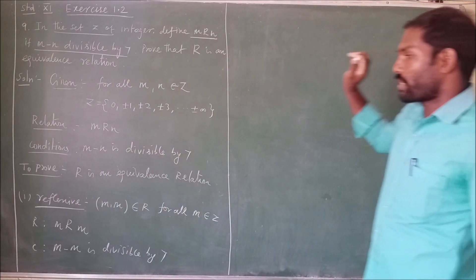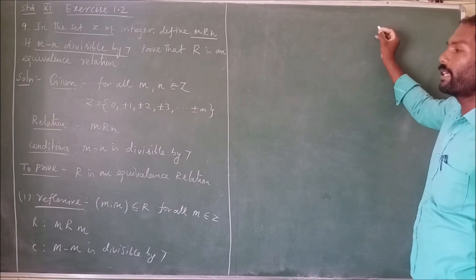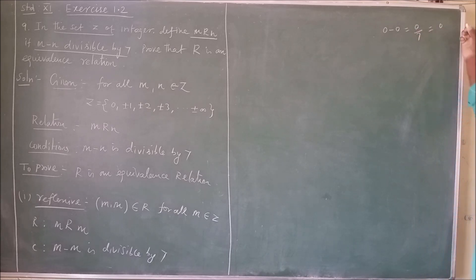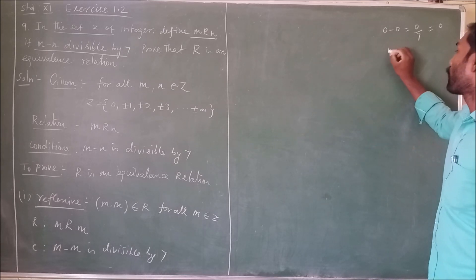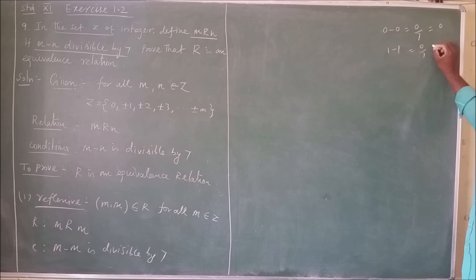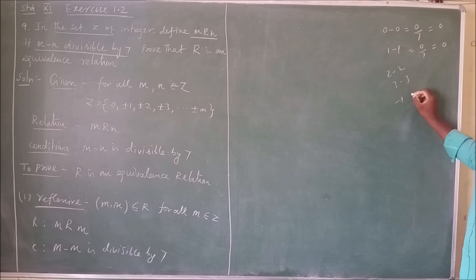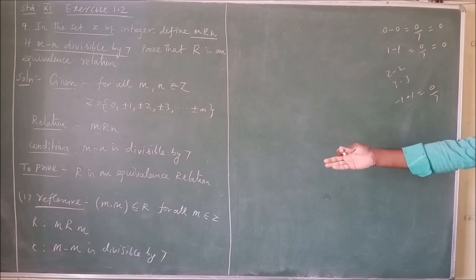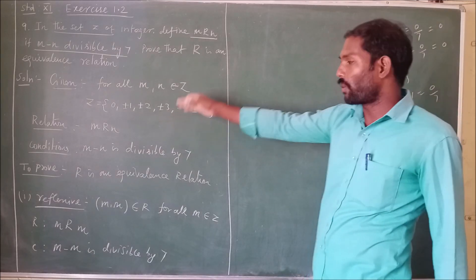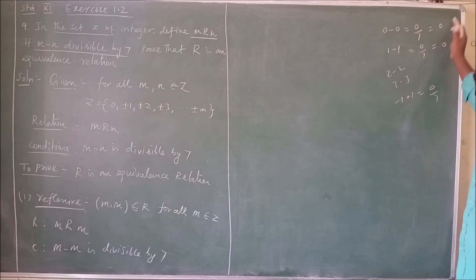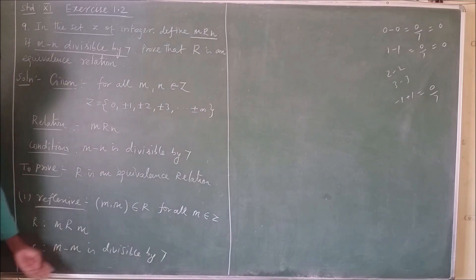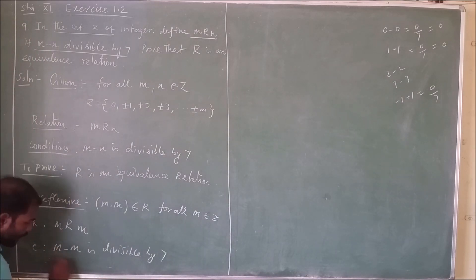For any number m in Z, m minus m equals 0. For example, 0 minus 0 equals 0, which is divisible by 7 giving 0. Similarly, 1 minus 1 equals 0 divided by 7 equals 0. Likewise 2 minus 2, 3 minus 3, minus 1 minus minus 1 — all equal 0, divisible by 7. Take any number in the integers; this condition is always satisfied. Hence, R is reflexive.